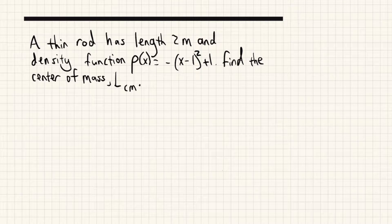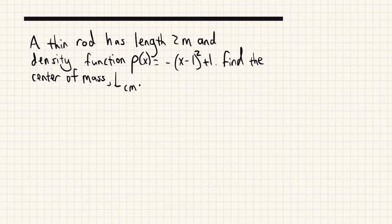Okay, let's go over a common physics problem. A thin rod has length 2 meters and density function ρ(x) = -(x-1)² + 1. Find the center of mass LCM.